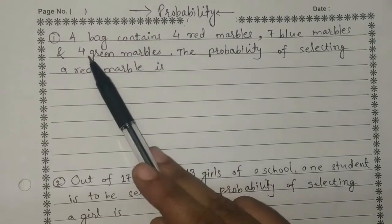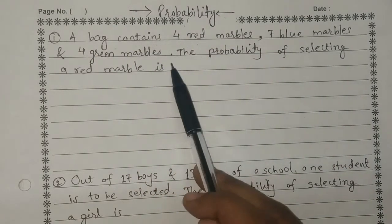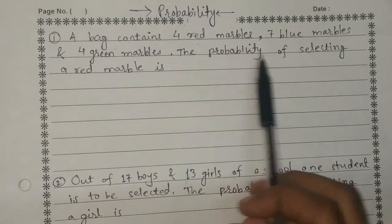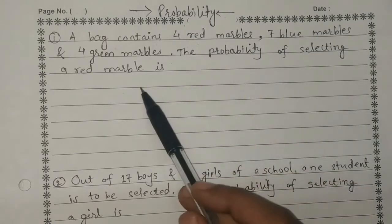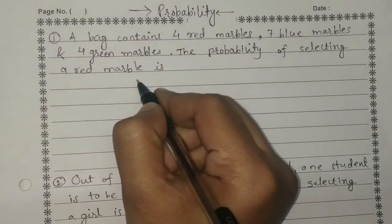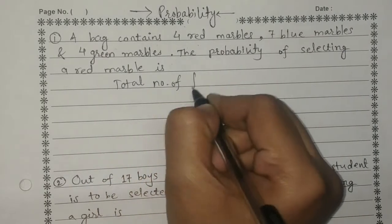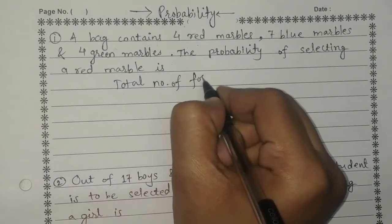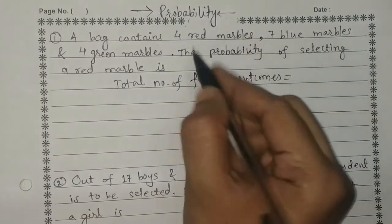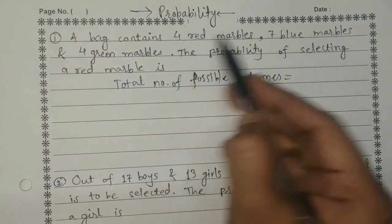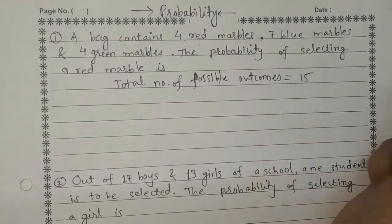The first question: a bag contains 4 red marbles, 7 blue marbles and 4 green marbles. We have to find the probability of selecting a red marble. First we find the total number of possible outcomes: 4 plus 7 plus 4, which gives us 15 possible outcomes.